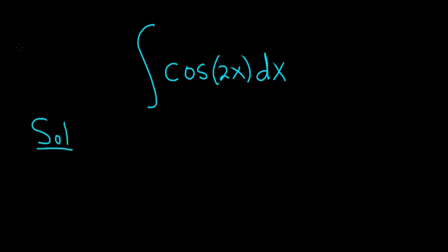So first, notice that if it was just cosine of x with respect to x, you would ask yourself, what is a function whose derivative is going to give you cosine? Because we're integrating, working backwards, we would get sine x plus a constant C. The question is, what's a function whose derivative is cosine? The answer is sine x plus some arbitrary constant.